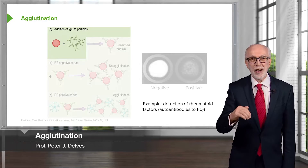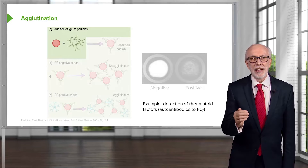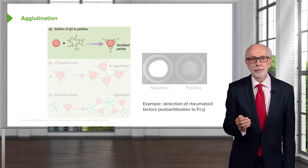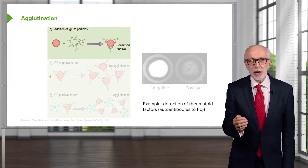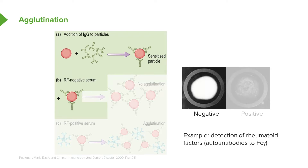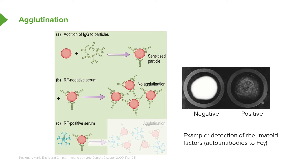In agglutination assays, particles are coated with either antibody or antigen. In this case, the particle is being coated with the IgG antibody, so you now have a particle that is sensitized with IgG. A rheumatoid factor negative serum will not cause agglutination of these particles. However, if a patient has rheumatoid factor — which are autoantibodies directed to the FC part of IgG — then addition of serum from that rheumatoid factor positive patient will cause agglutination.